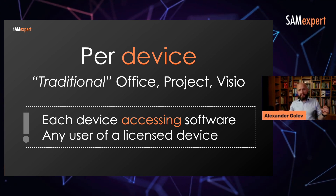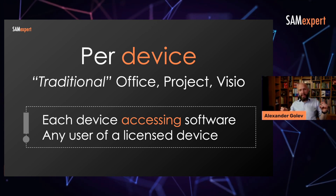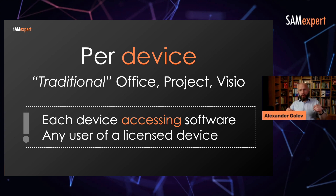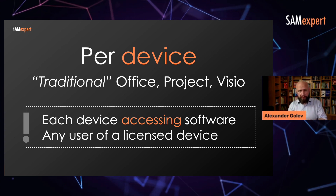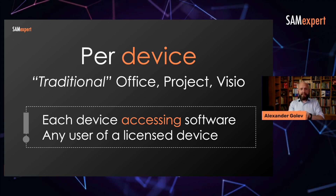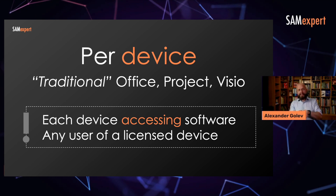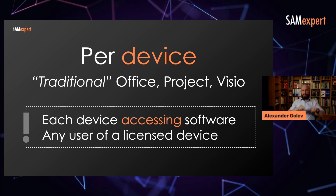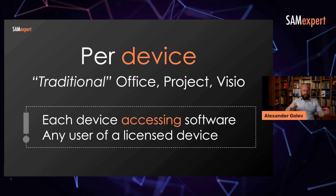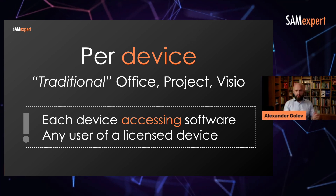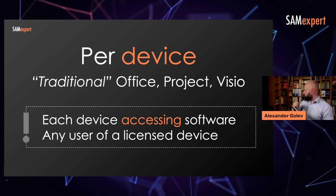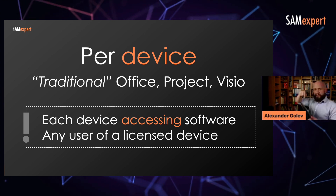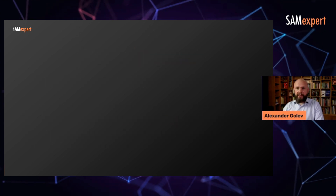The common misconception is that you need to license devices where the Office is installed. What I'd like you to remember is that a per-device license is actually assigned to licenses accessing the software. It may be installed on one computer, then you take another one or an iPad and access from there to that laptop — you actually need a license for Office for that device as well.